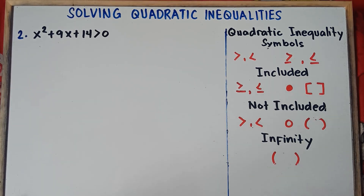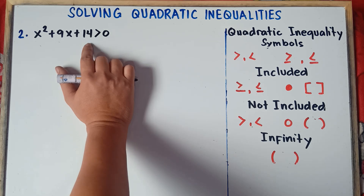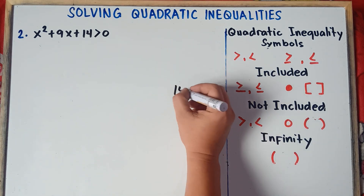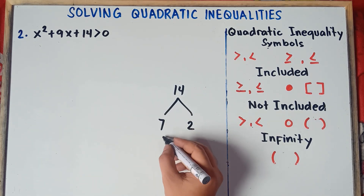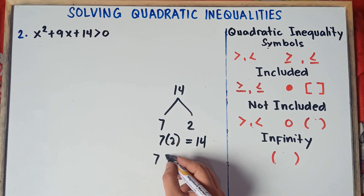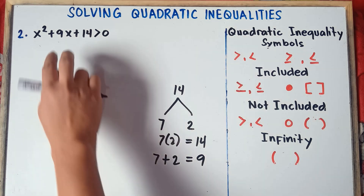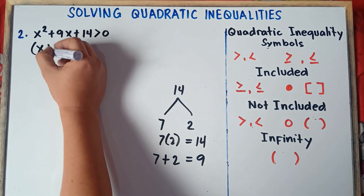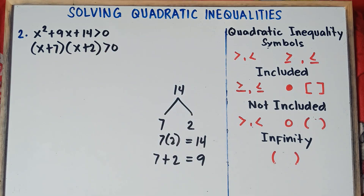Let's start answering. The first step is you need to factor this quadratic inequality. Find two numbers that when you multiply them you get 14, and when you combine them you get positive 9. For positive 14, that would be positive 7 and positive 2. Because 7 times 2 is 14, and positive 7 combined with positive 2 gives positive 9. So the factors of this quadratic inequality are (x + 7) and (x + 2), and then copy greater than 0.